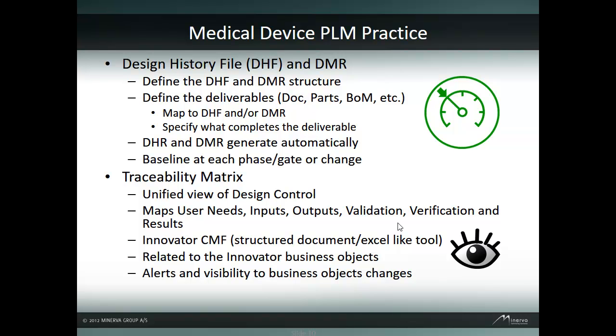The traceability matrix is a unified view of the design control. It utilizes the content modeling framework in an Excel-like format to map user needs, design inputs, and outputs to their verification and validation results. The key differentiator from an Excel spreadsheet is that the traceability matrix is a structured document with relationships to the Innovator business objects. As these business objects change, the traceability matrix can receive alerts and updates. For example, when a requirement for a design input changes, the change will be highlighted in the traceability matrix, notifying the user to review the validation plans, verification plans, and the design outputs.